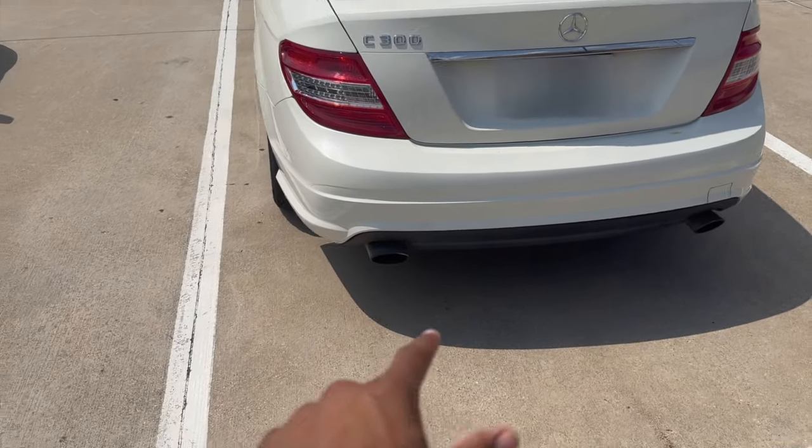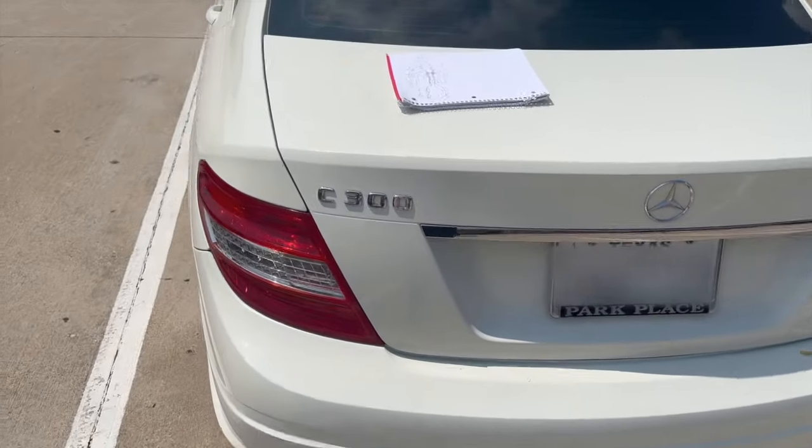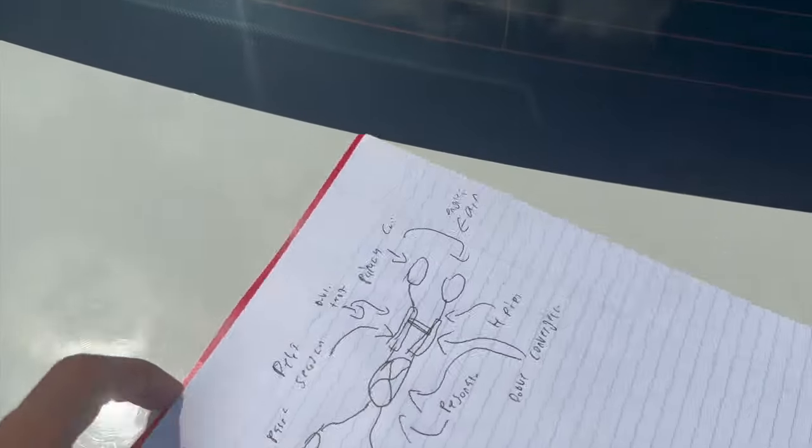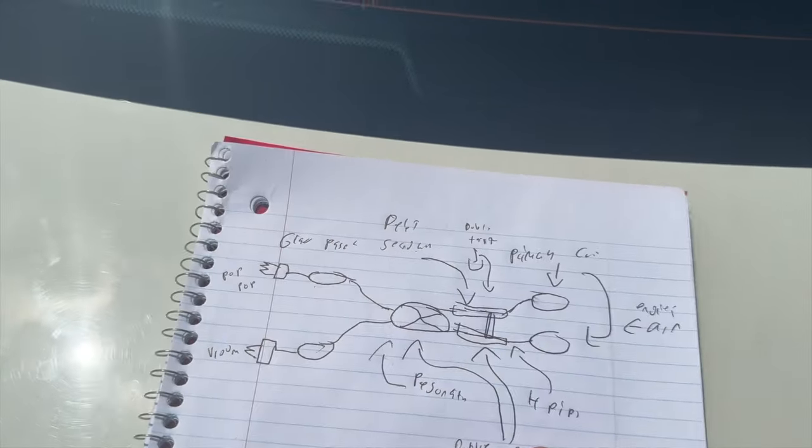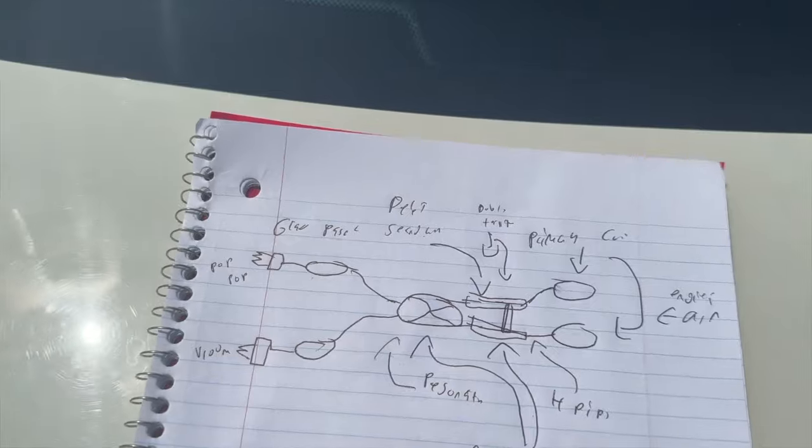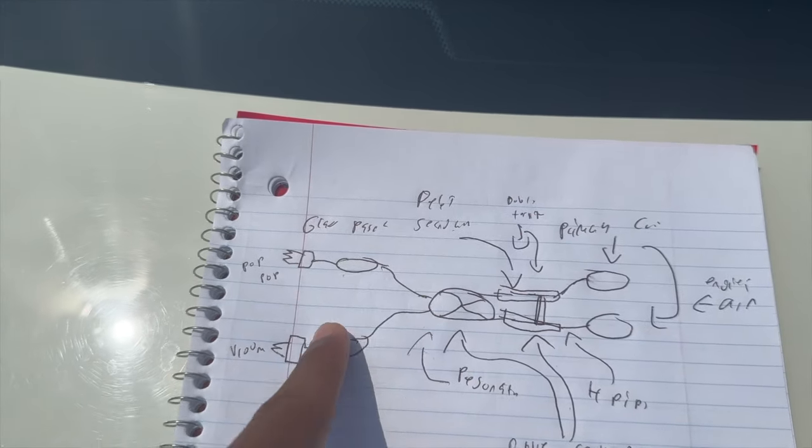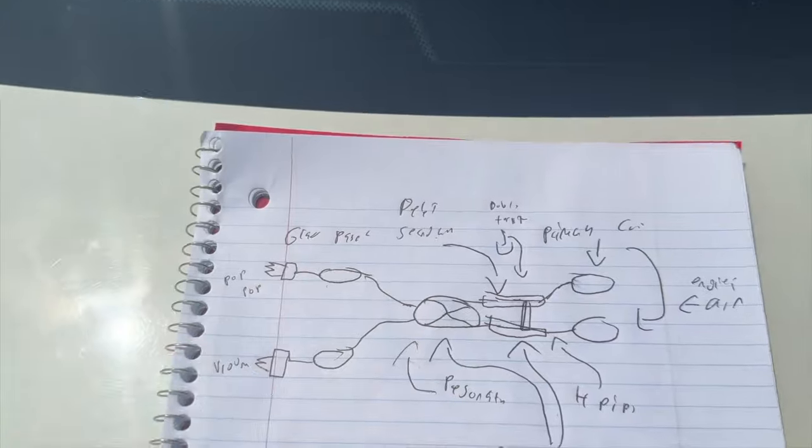Alright so I'm getting some exhaust work done on the C300. This is the setup right here. Now it looks mad sketchy but we're gonna figure this out. So we got a H-pipe going to a resonator going to two glass packs in the back.